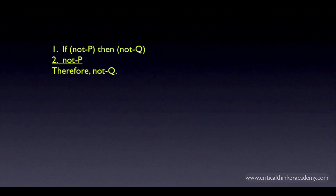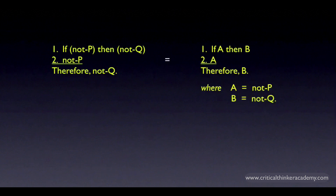An important point applies to all of the conditional argument forms we'll be looking at. If we replace the antecedent and the consequent with their negations throughout the argument, the argument is still an instance of modus ponens, even with those negation signs. It's equivalent to the standard form with the obvious substitutions — the antecedent isn't P, it's not-P, and the consequent isn't Q, it's not-Q. In fact, you can have long, complex compound claims playing the role of the antecedent and the consequent, and as long as they're related in the right way, they'll still be instances of modus ponens.